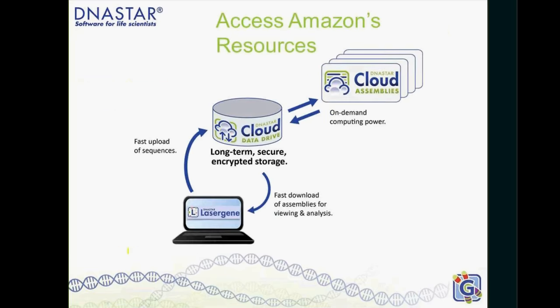If you don't have this hardware and you'd like to try the software, a good solution is to use the cloud. You set the assembly up locally, the data gets encrypted and sent to the Amazon cloud, which spools up a computer for you, runs the assembly, and lets you download the results. The cloud is useful when you need to run 10 exomes by tomorrow — Amazon can boot up multiple virtual computers to run assemblies concurrently. Your data is also stored in the cloud for access from multiple locations.